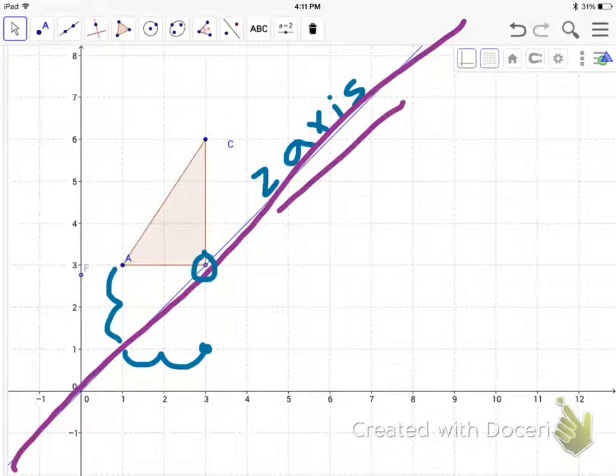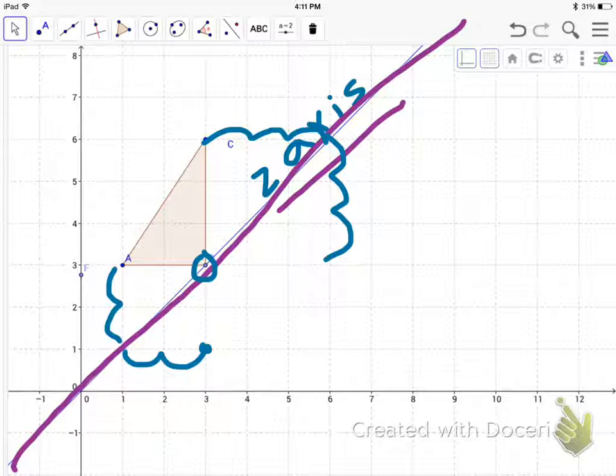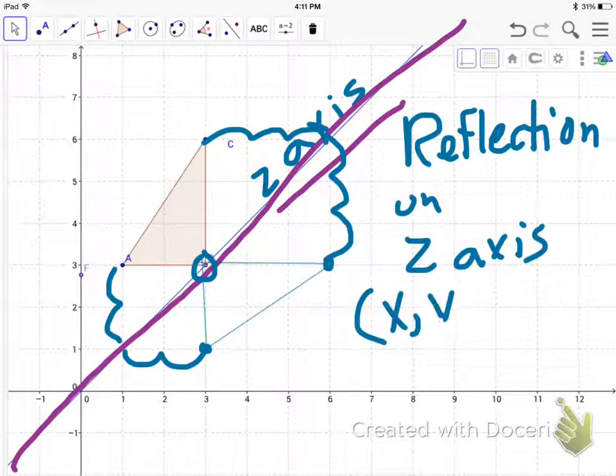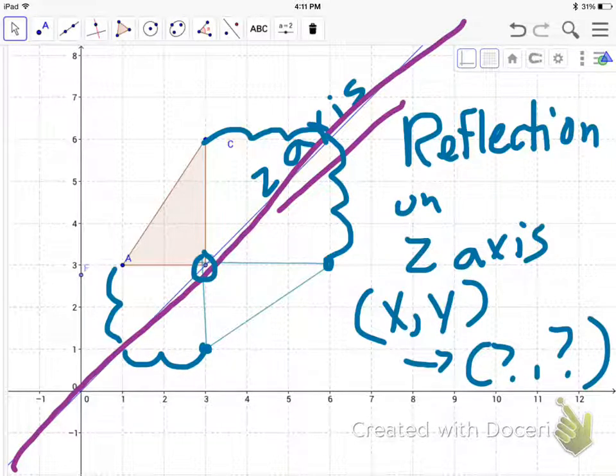This point right here is already on the z-axis, so the reflected point will be in the same spot. And we'll look at point C. Point C is three steps away from the z-axis. And then I plot my point three away that way. So that is my reflected image on the z-axis.